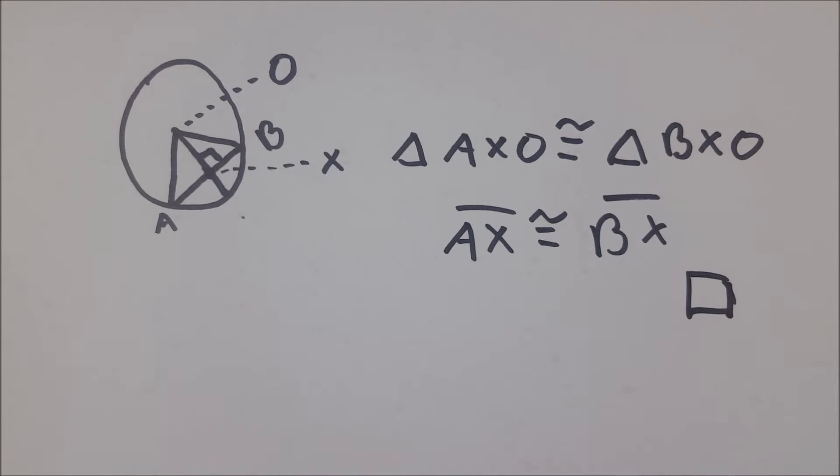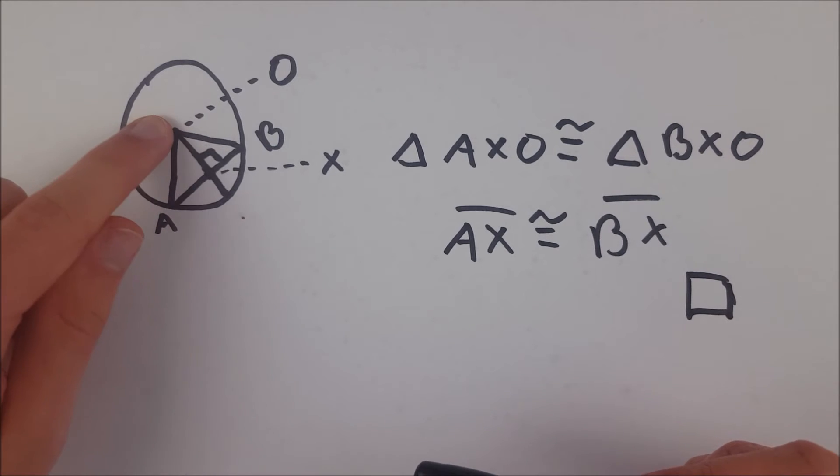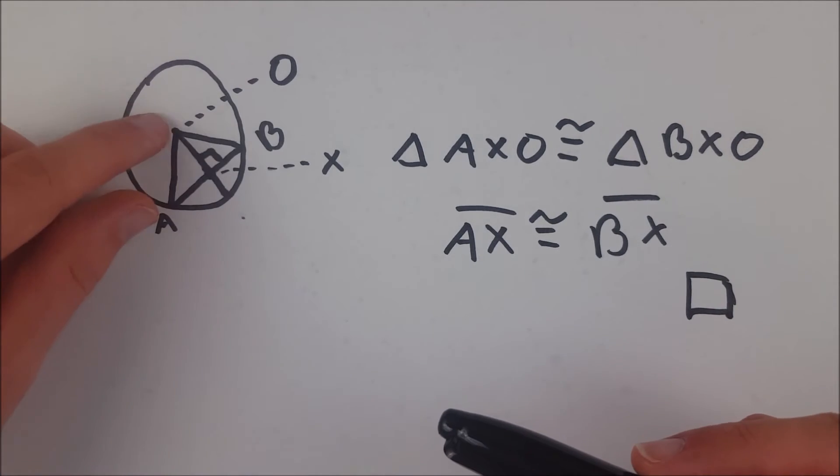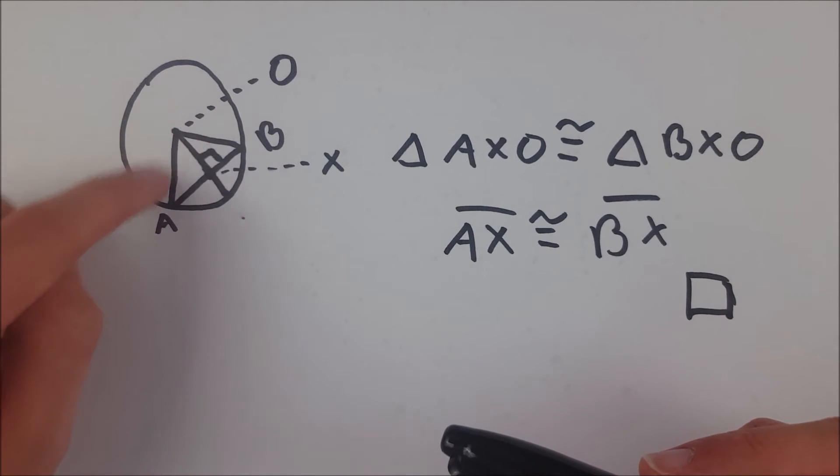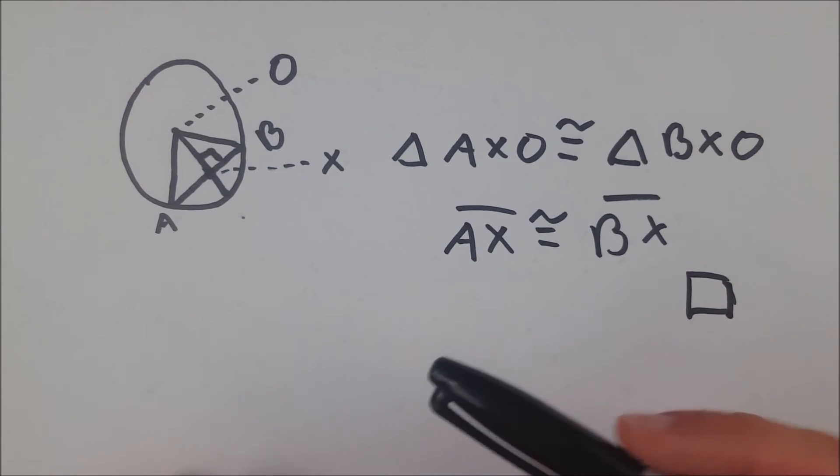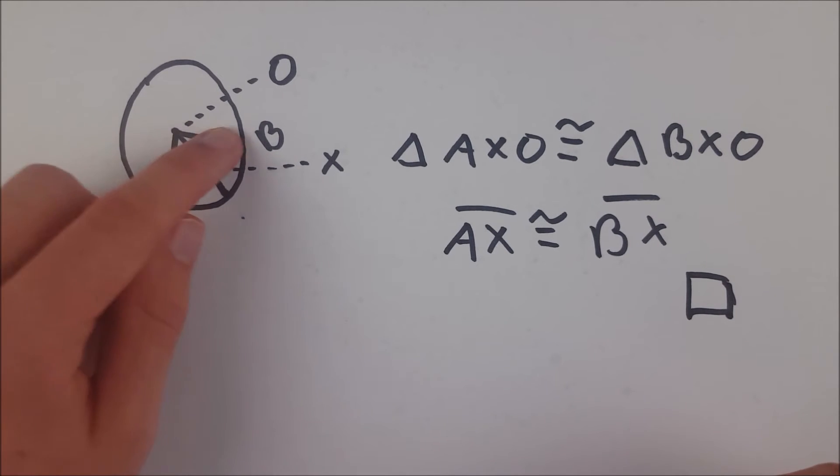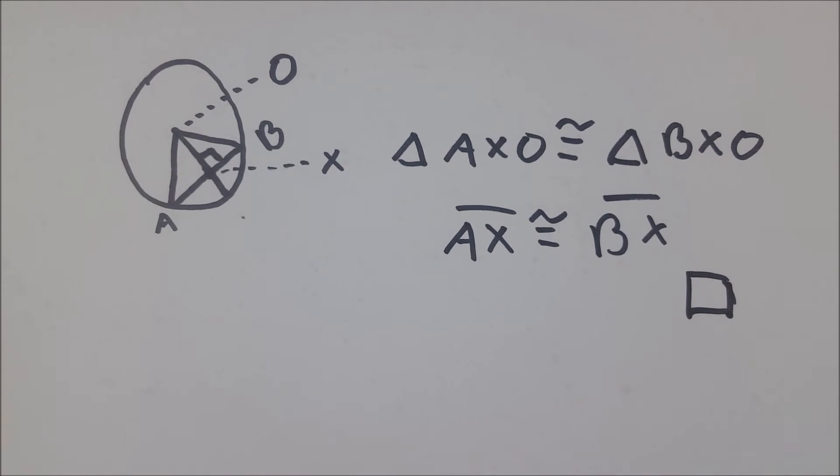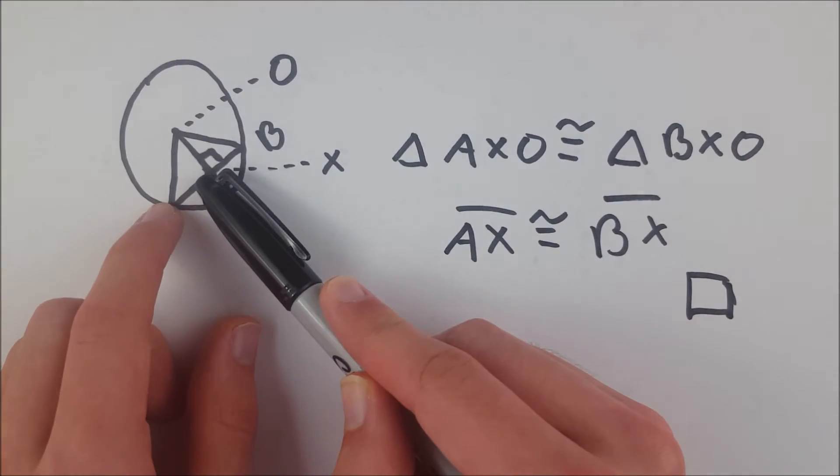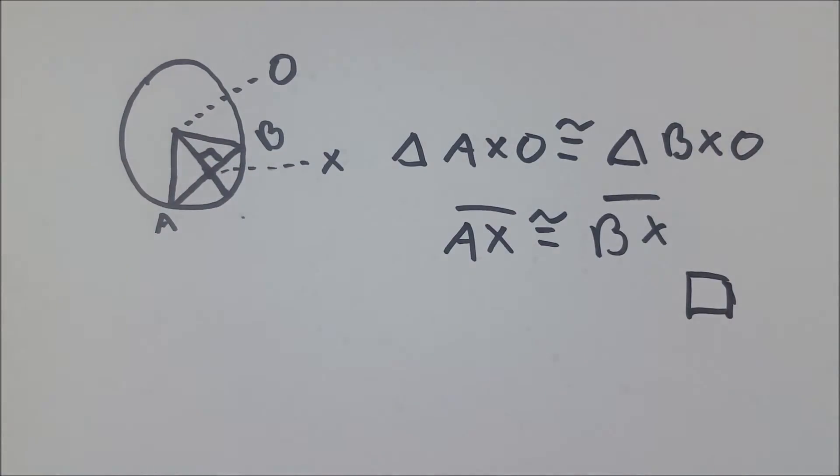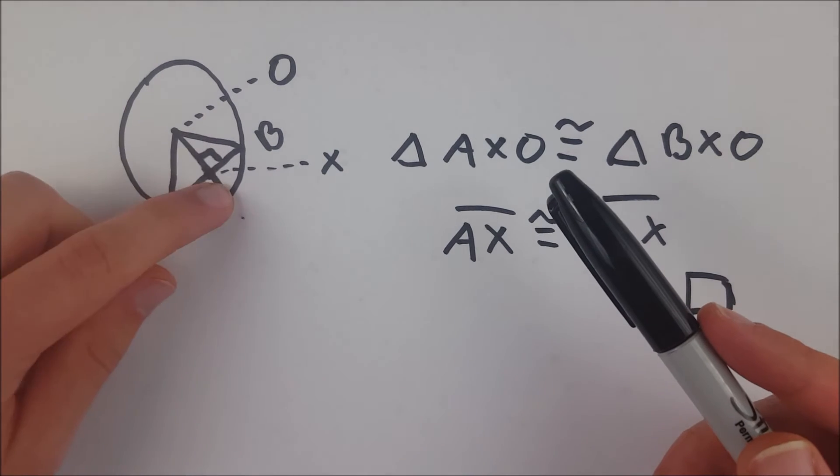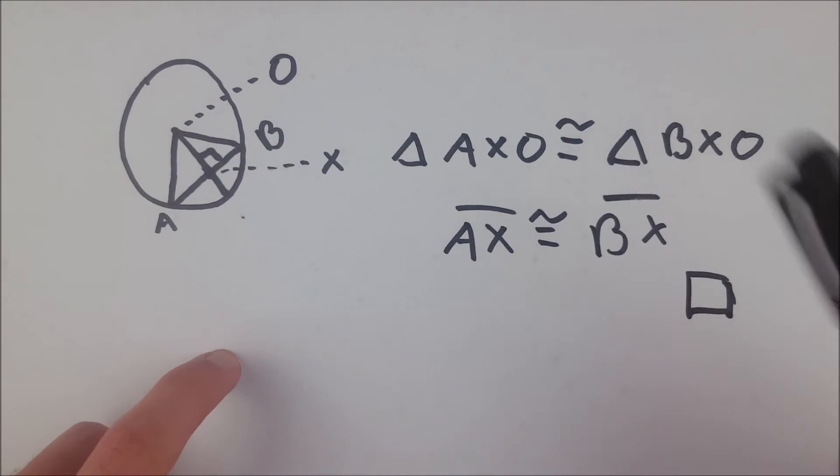Just to run you through that real quick again, we drew a radius that is perpendicular to this chord and then we drew the radii from the center to the endpoints of the chord, that's two radii. And using hypotenuse leg we were then able to say that the two triangles, two right triangles that we have created, have to be congruent. Therefore segment AX is congruent to segment BX and that means that the radius has indeed bisected that chord.